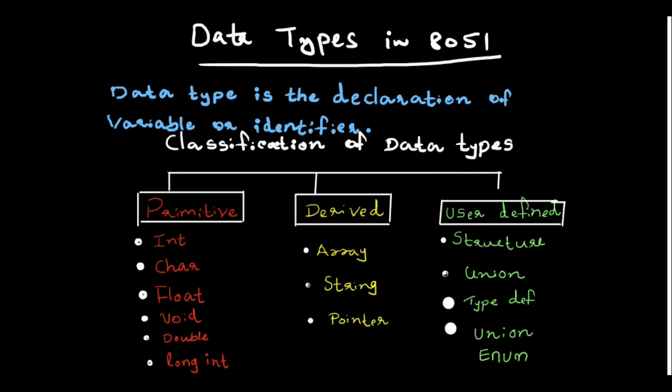Now, data types in 8051. Before concentrating completely on the microcontroller, we should have a general idea about C data types. A data type is the declaration of a variable or identifier — this variable is also known as an identifier. Data types can be classified as primitive type, derived type, and user-defined type.